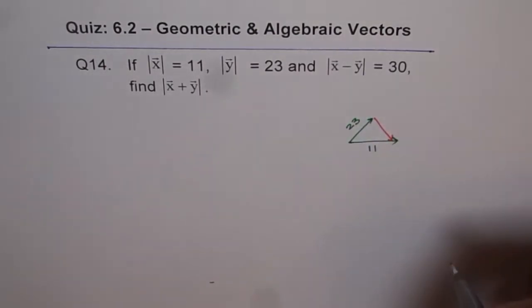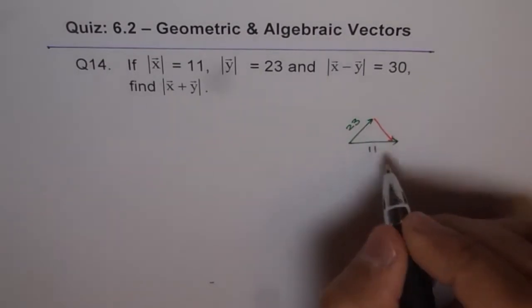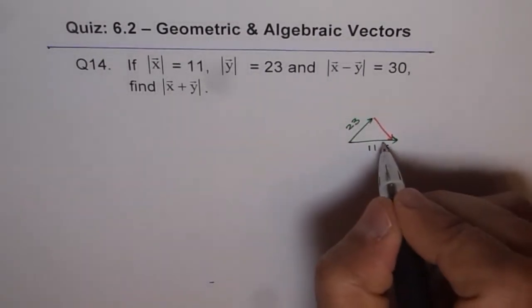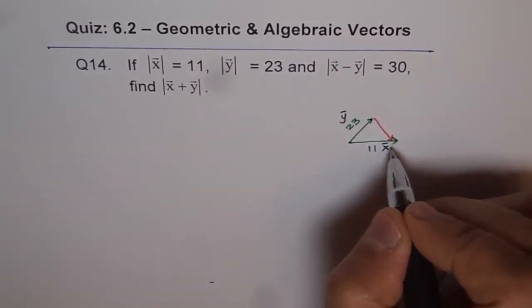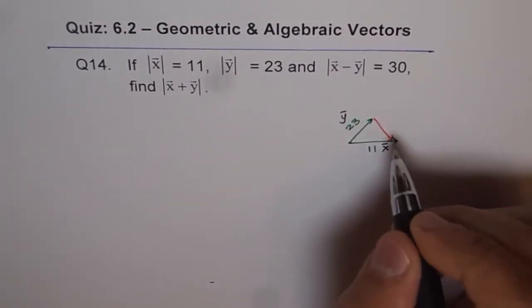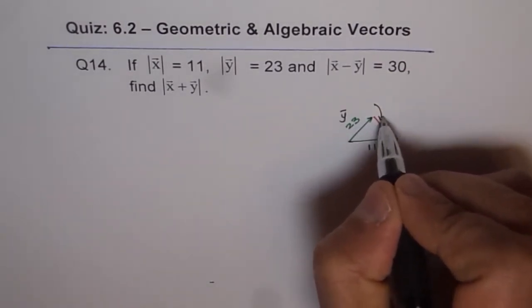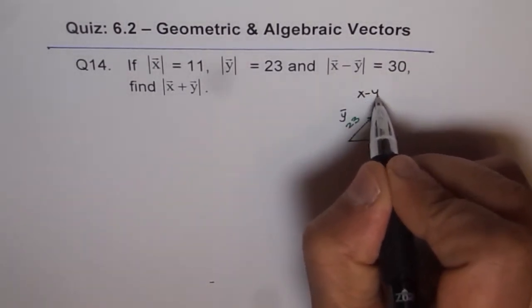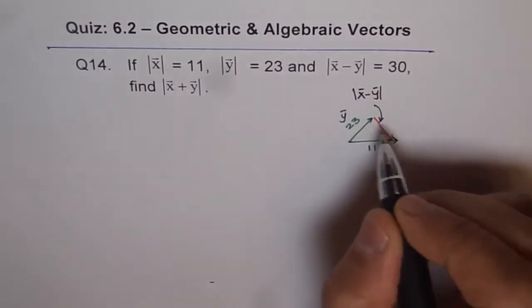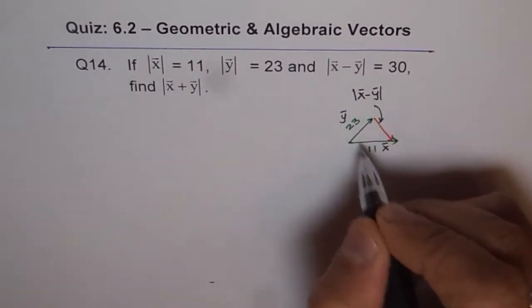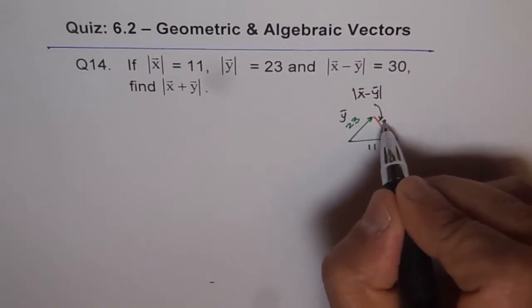Now, x minus y is the vector from y to x. So that is x minus y. Here we have x, this is y, and this is x minus y. So we'll write this as x minus y. We know x minus y and these two sides — so we know basically three sides, and this is 30 for us.